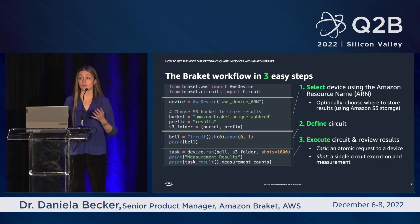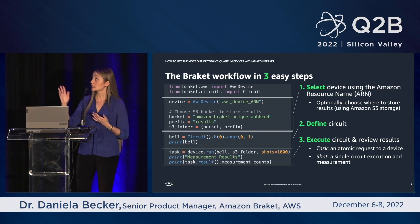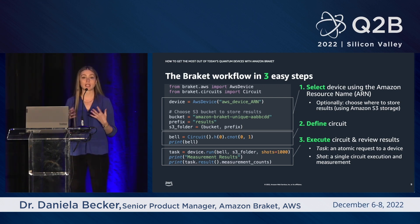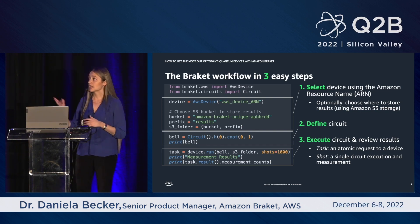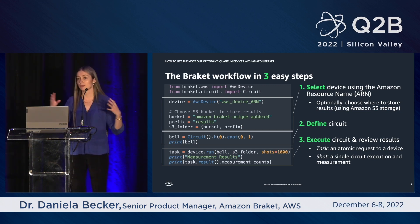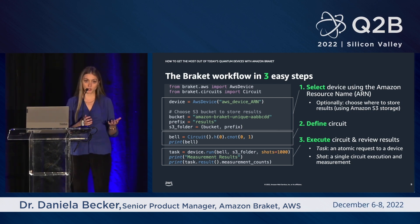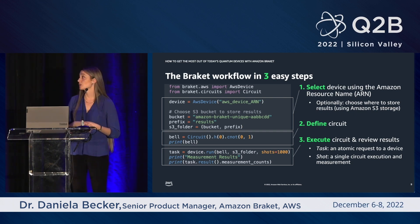Any Braket workflow can be broken down into three steps: select the device, define your circuit, and execute your circuit and review your results. Within Braket, we identify individual devices using the Amazon Resource Name or ARN, so all you need to do to target a different device is just change that one line of code. In this example, we're choosing a basic bell circuit — the quantum version of hello world. We execute using tasks and shots: a task is an atomic request to a device, and a shot is a single circuit execution and measurement. Here we're running this task using a thousand shots.